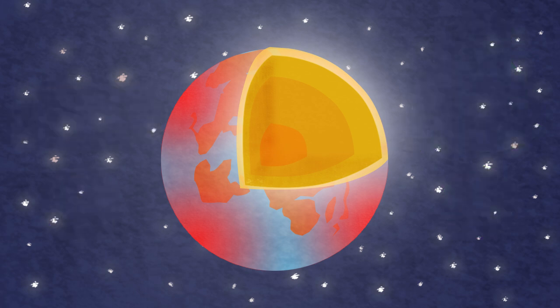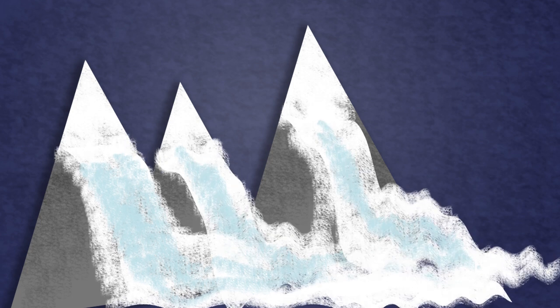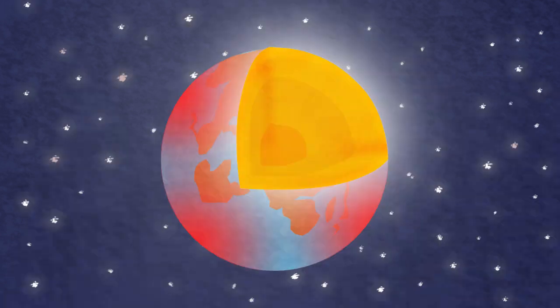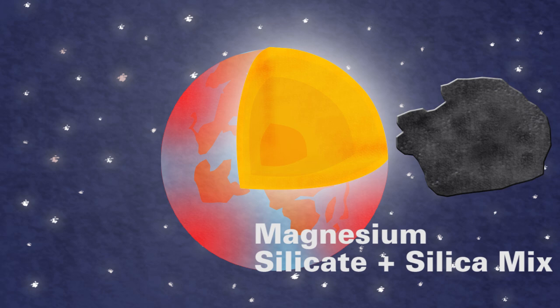Although the mantle is solid, it is able to flow rather in the same way that solid ice flows when glaciers flow down mountains. Finally, there is the solid crust, which is a relatively thin layer of basalt, mainly magnesium silicate and a silica mix, made from fully solidified magma.